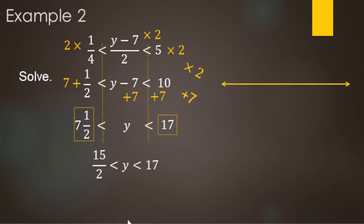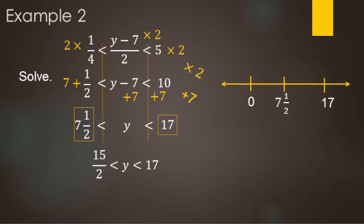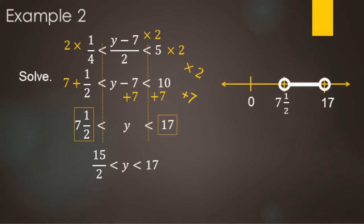Sometimes it's better to use improper fractions since they're easier to do operations with. However, when graphing, 7 and a half is easier to place on a number line than an improper fraction. For the number line, we have 0 as reference, and then 7 and a half and 17. Both the 7 and a half and the 17 are strictly less than — so both get open circles — and y is between them. We're looking for y's bigger than 15/2 and smaller than 17, which is the region shaded between those two open circles.